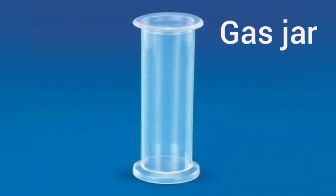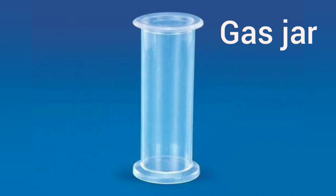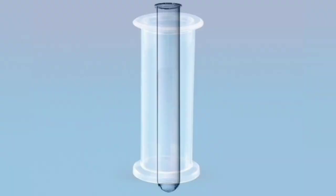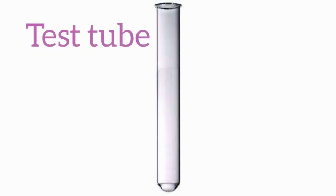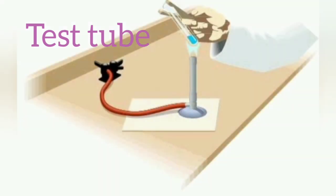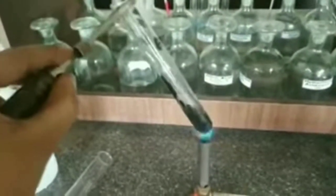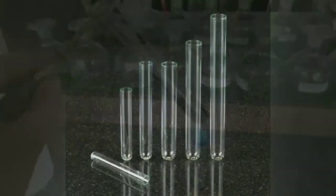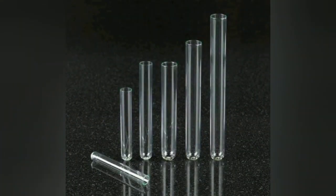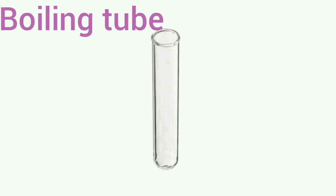A gas jar is a cylindrical glass container with a broad base and a broad opening. It is made of hard glass and has a lid. It is used to collect and store gases. A test tube is a thin glass tube with an open top and a round U-shaped bottom. It is used to hold materials for small-scale laboratory tests and is available in various sizes.